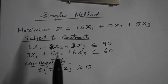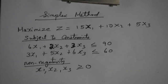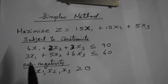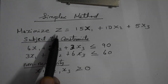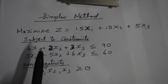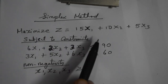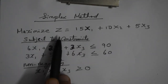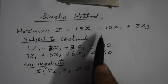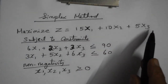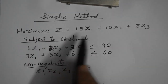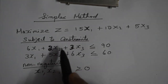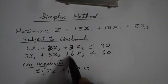I am going to teach you simplex method. By default, simplex method is used to solve a maximization problem. Let us take this problem with three variables. Maximize z equals 15x1 plus 10x2 plus 5x3. This is the objective function, and for this we have the constraints.